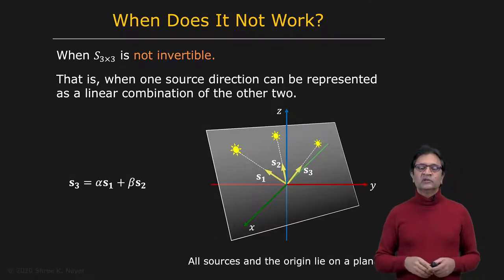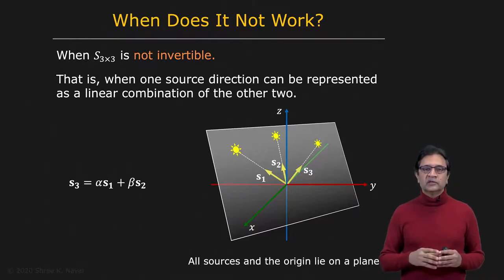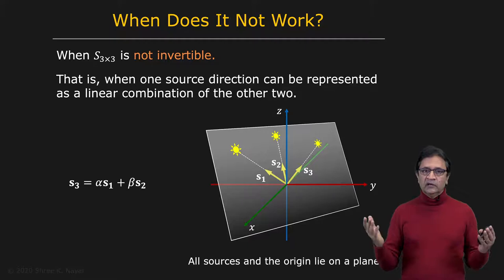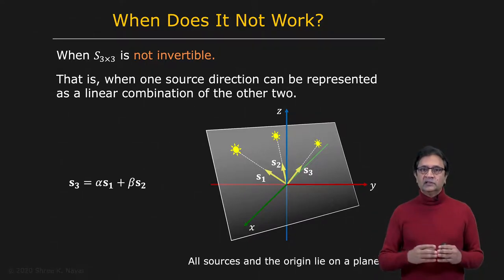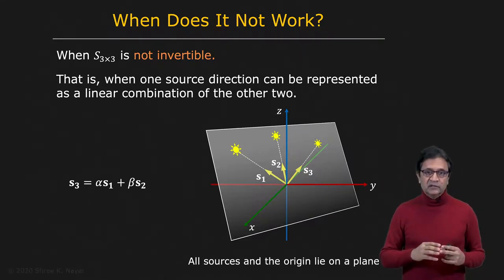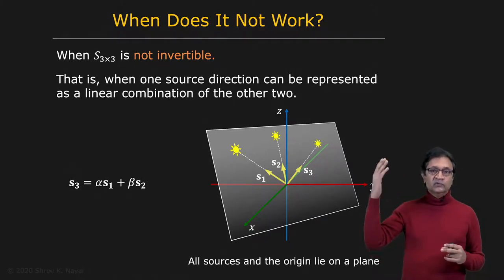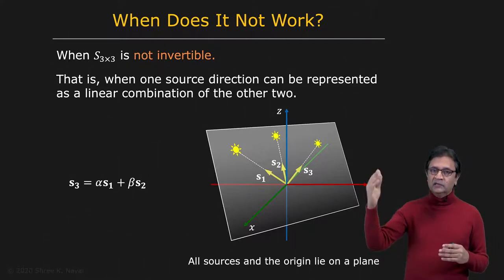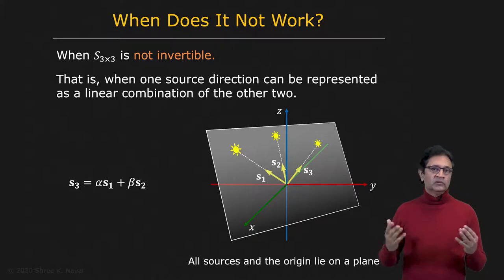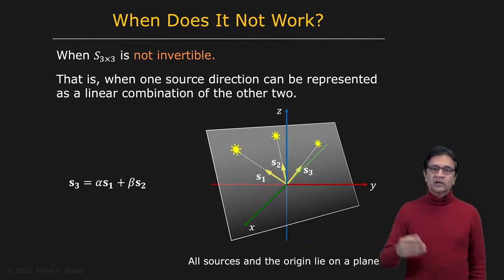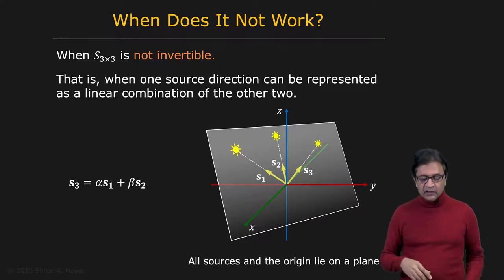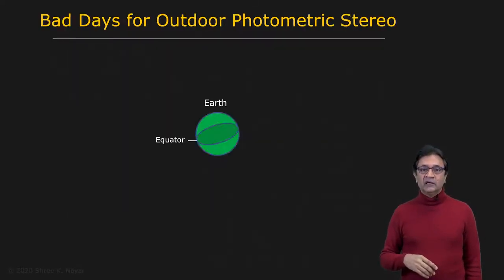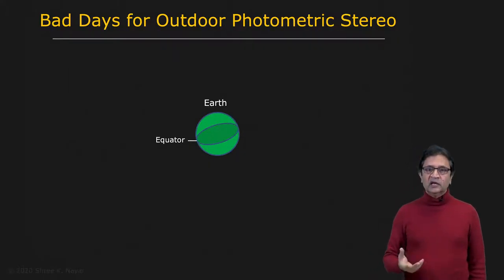This brings up an interesting point: what if you wanted to do photometric stereo outdoors? We have a light source — the sun — that moves along a path. You could set up a camera looking at a building, and the sun does the work as it moves. You collect images throughout the day and compute surface normals at each point on the building. However, it turns out there are certain bad days for photometric stereo — days when the source matrix S is not invertible.